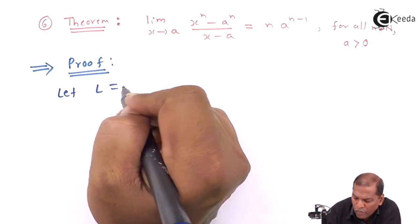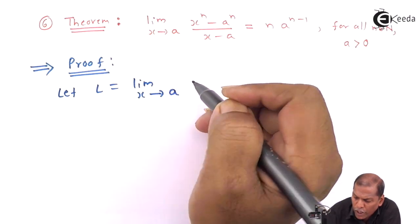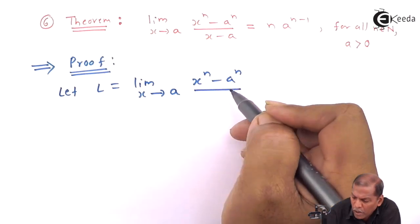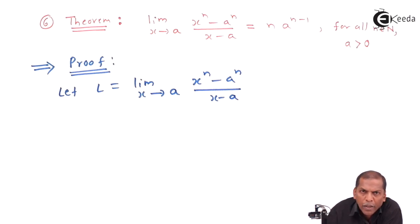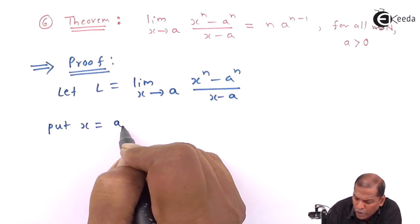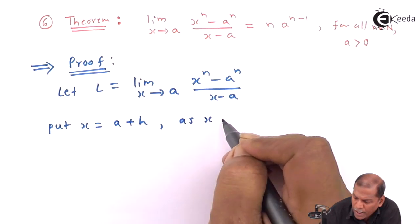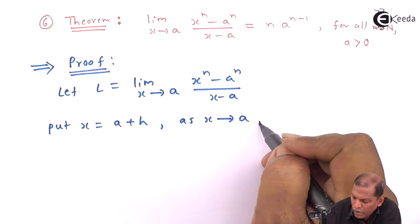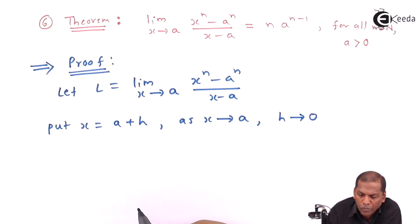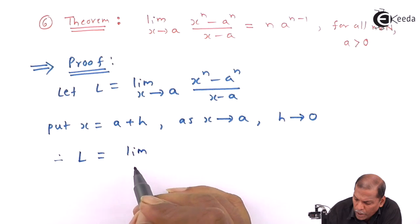Let L represent the limit as x tends to a of x raised to n minus a raised to n, divided by x minus a. Now put x equal to a plus h. As x tends to a, h tends to 0. So the next step will be L equals limit...